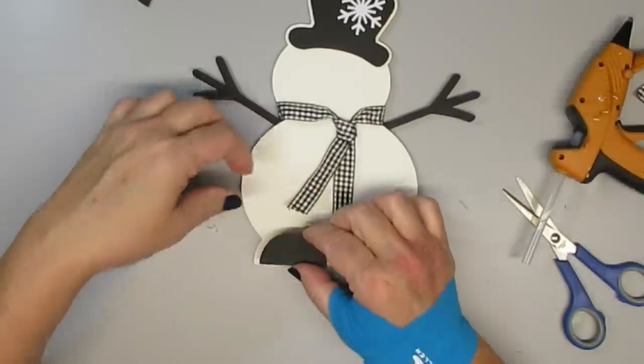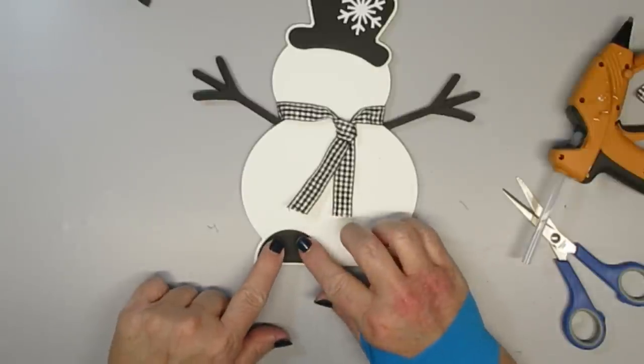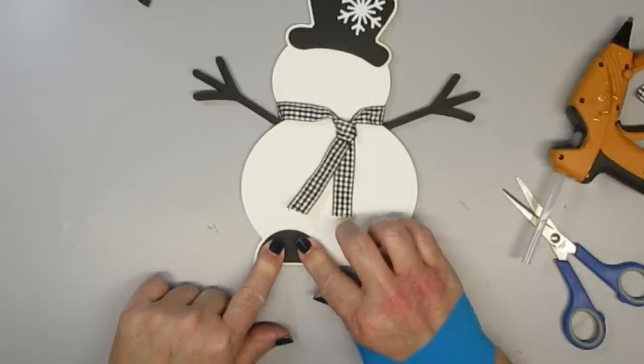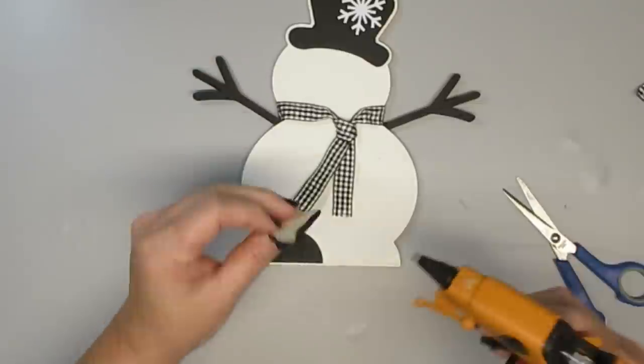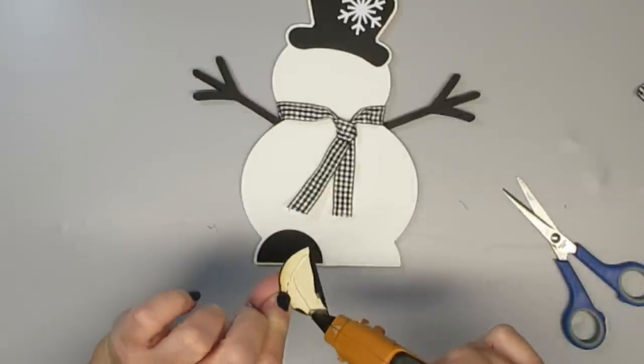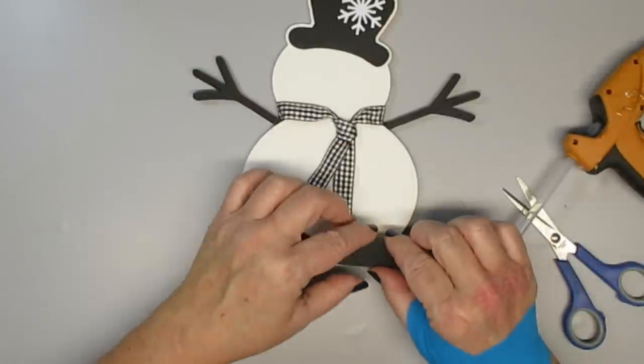Then I'll do the same for the little boots down at the bottom. I just think this gave it a little bit of an extra touch because this snowman doesn't have a face or any buttons or anything and I wanted to stay true to the inspiration.